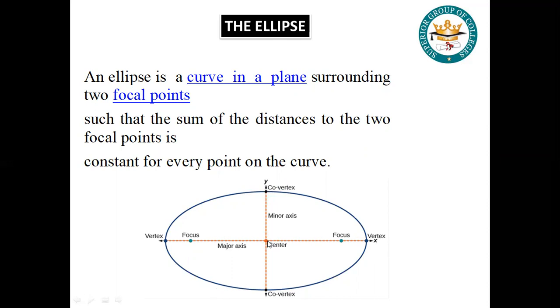Where they intersect we call the center. These are two focus points which I have already mentioned, focal points. And these are vertices, vertex and vertex, where the axis intersects the ellipse. And these are the other co-vertices.